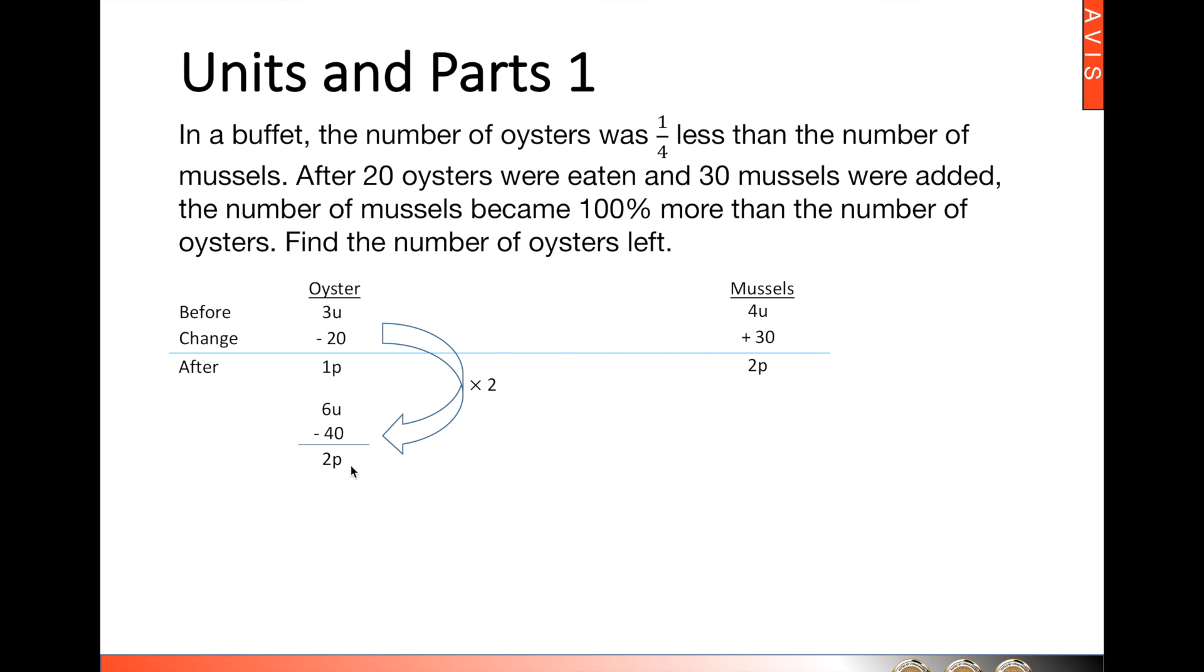After we've made the parts the same, we will then achieve the 6 units minus 40 here. It will then equal to the 4 units plus 30 here. So the difference of two units will then represent 70. We can find what each unit is.